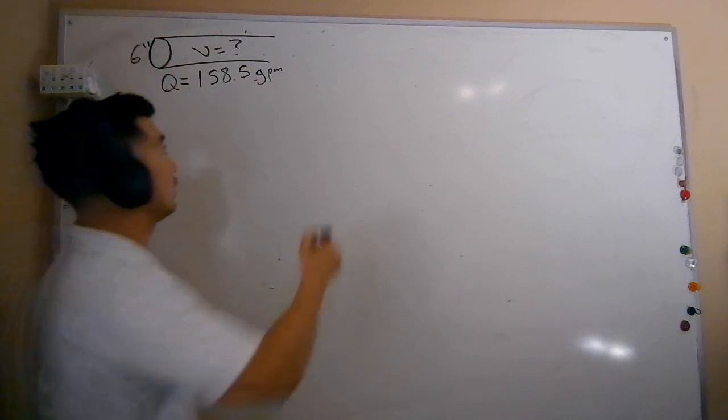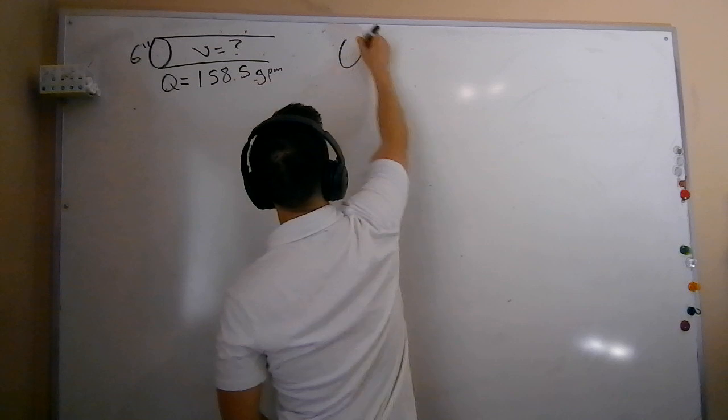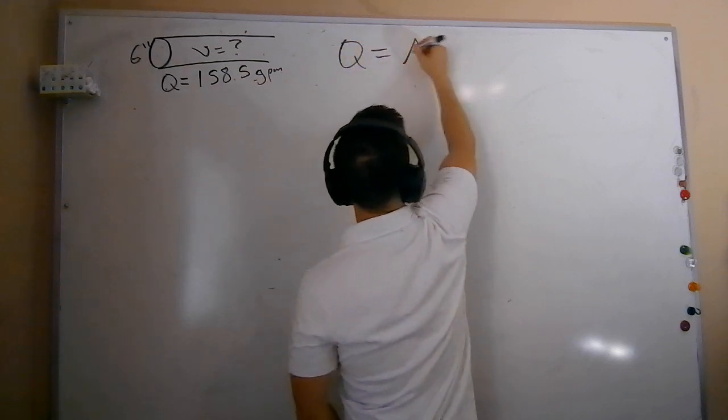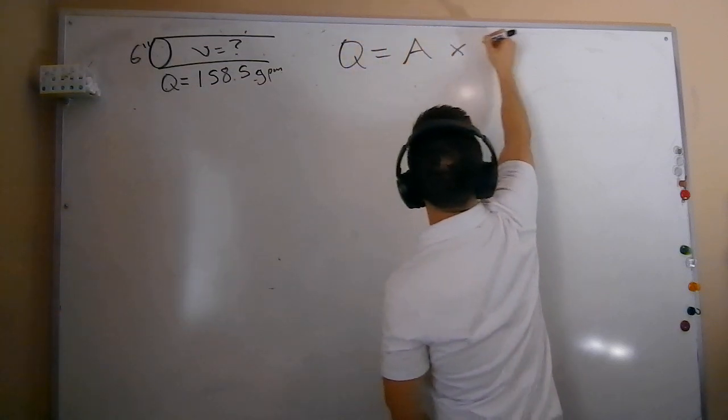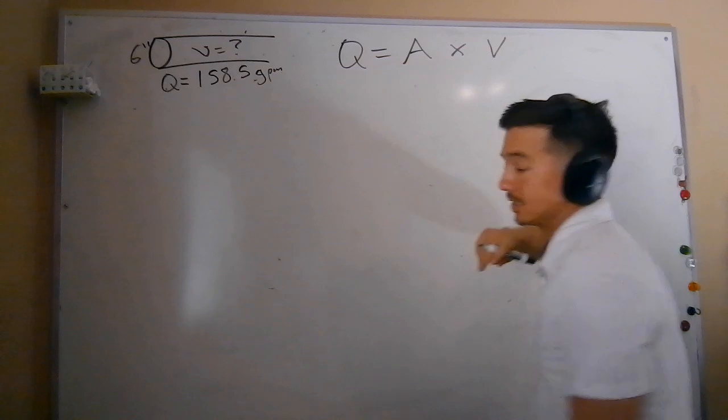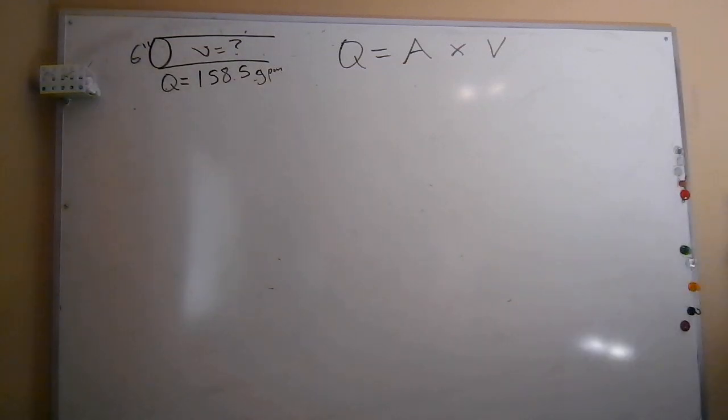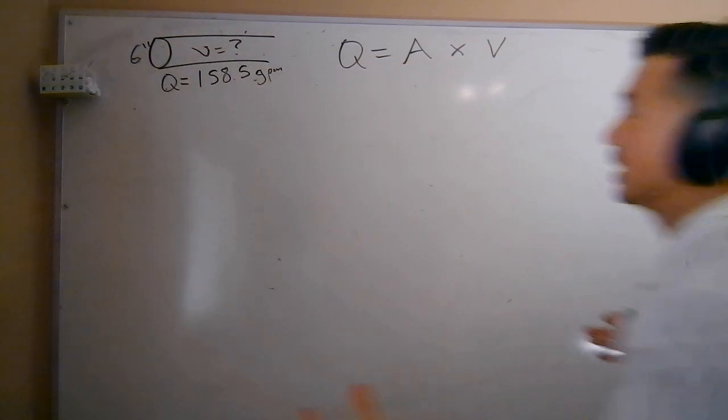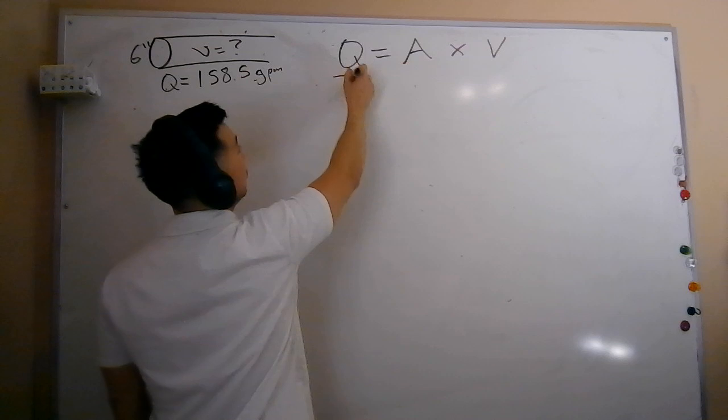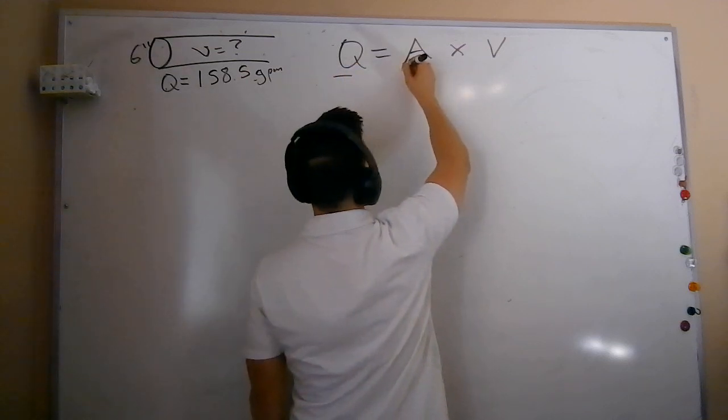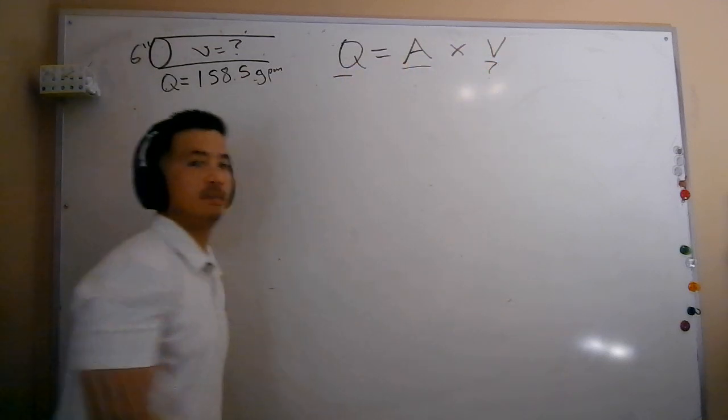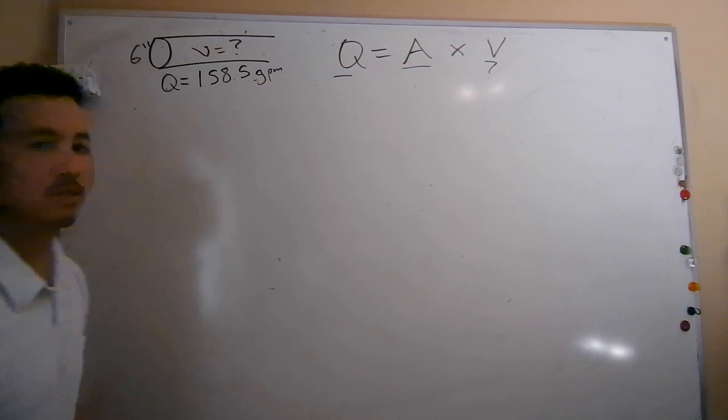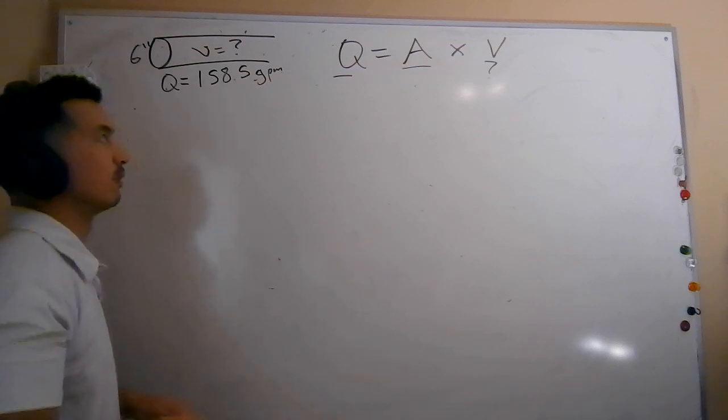So in this example, we can start with our formula for flow, Q equals AV, or area times velocity. So Q, the quantity of water, equals area times velocity. In this example here, we're given Q. We can calculate the area. What we don't know is our velocity. So it's a little bit different from how we sometimes traditionally use the QAV formula.